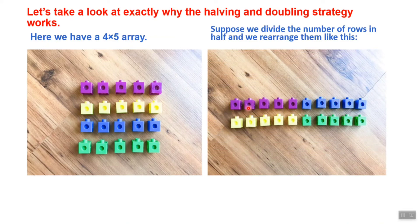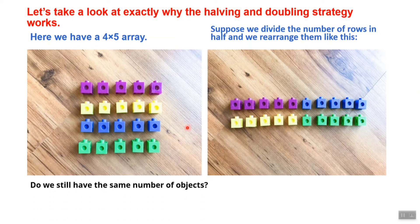The same number of blocks can be arranged with 10 blocks in one line and 2 rows total, giving us a 2 times 10 array. Do we still have the same number of objects? Yes, we have the same number - 20 in both arrangements. They are just rearranged differently.